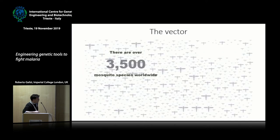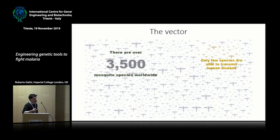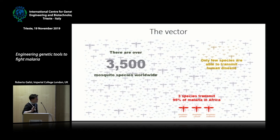The vector that is responsible for the transmission of the malaria parasite is the mosquito. There are thousands of species of mosquitoes, probably quite a few still not identified. Only a few of these species are able to transmit diseases, and only three of these thousands of species are responsible for more than 95% of malaria. So we don't really need to get rid of all mosquito species — we can focus on these three as a start, and that would already be a major achievement.